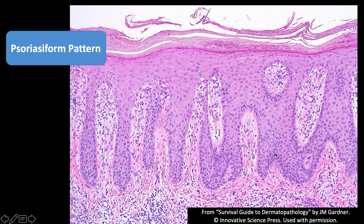Those are all features very characteristic of psoriasis. Psoriasis in particular has not just acanthosis, but very regular acanthosis — all of the rete ridges are about the same length and about the same size, and they all look just the same. That's very typical of psoriasis in a classic situation.